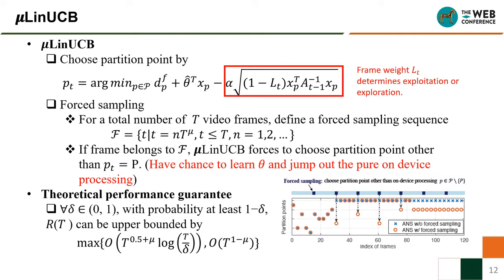In light of these limitations, we propose a new online learning algorithm called New LinUCB to support ANS. For the first limitation, we introduce a frame weight in the confidence of edge offloading delay prediction to treat keyframes and non-keyframes differently — for example, we set the weight to 1 for keyframes and 0 for non-keyframes. For the second limitation, we introduce a forced sampling technique: every T_MU frames, when the frame belongs to the forced sampling sequence, New LinUCB is forced to choose a partition point other than pure on-device processing. Thus, it has a chance to update theta and jump out of pure on-device processing. We also give a theoretical performance guarantee for our New LinUCB.